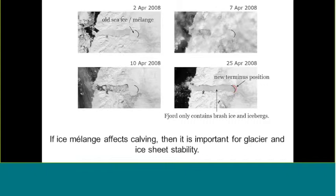As you continue later into the spring, you start to see the sea ice breaking up in the fjord — it's retreating farther up the fjord. And then between April 10th and April 25th, we have our first large calving event of the year that resulted in a couple of kilometers of retreat.